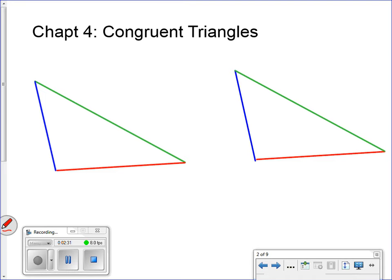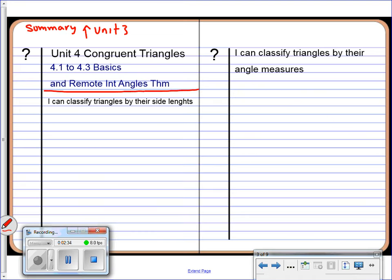4.1 to 4.3. Here we are. Let's go ahead and put a date in there so that you can keep track of these things. Unit 4, congruent triangles. We're looking at 4.1, 4.3, basics, and remote interior angles. That's the big concepts. In your student learning map, one of the concepts or one of the I can statements is that you can classify triangles by their sides.